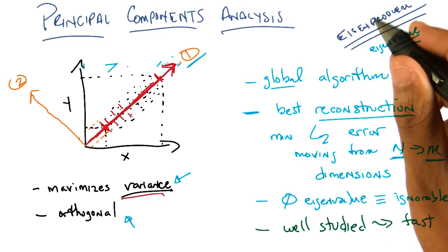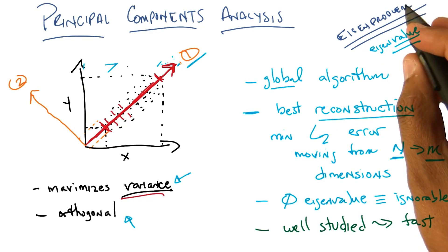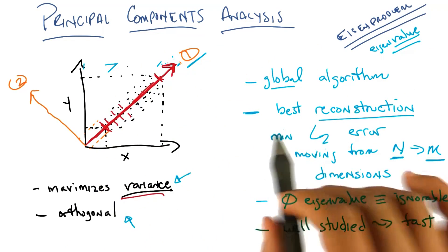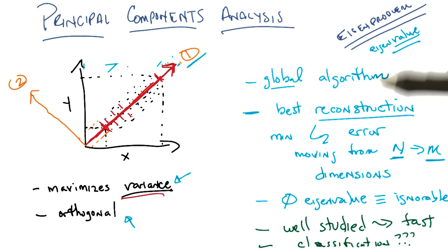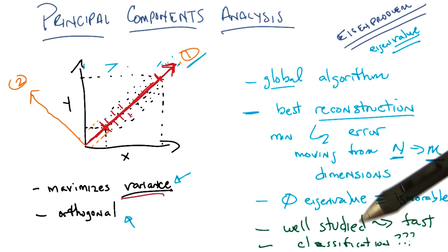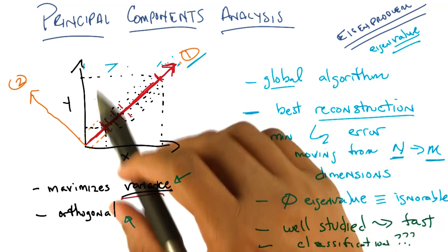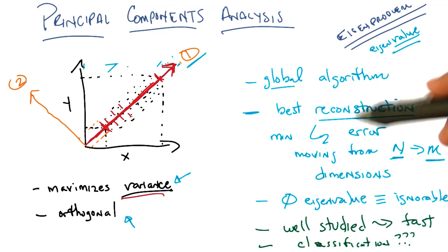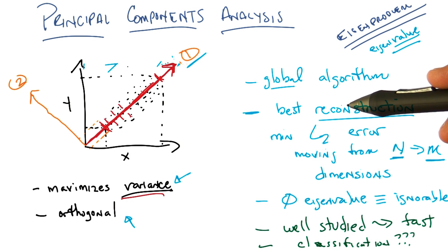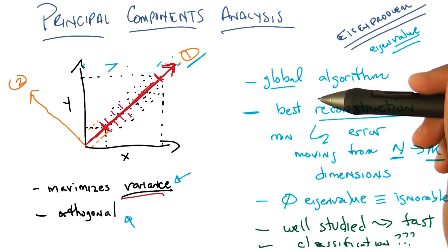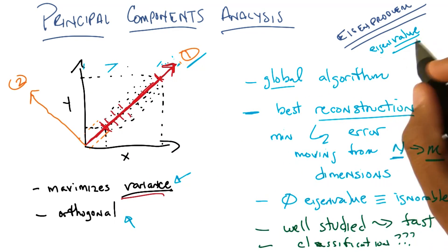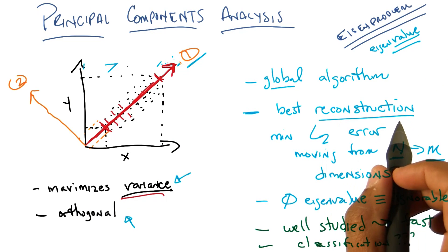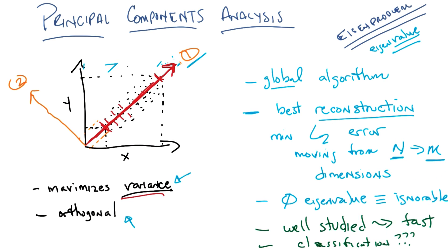But this does lead me to a practical question: you've got an algorithm that provably gives you the best reconstruction — but what does it have to do with classification? We find projections that are relevant in the sense that they allow reconstruction, but it's not clear that throwing away projections with low eigenvalue — even though you'd still be able to reconstruct your original data — would actually help you do classification later.